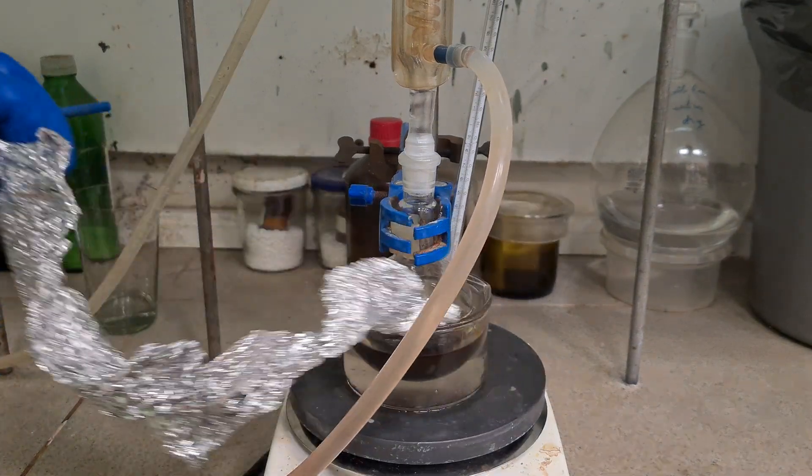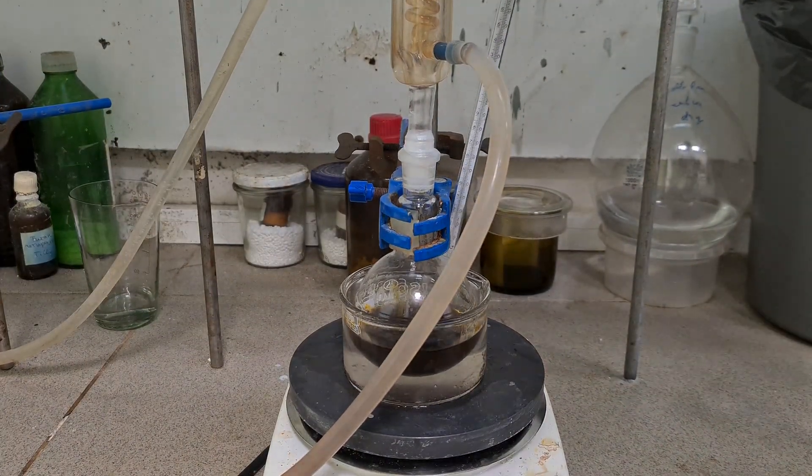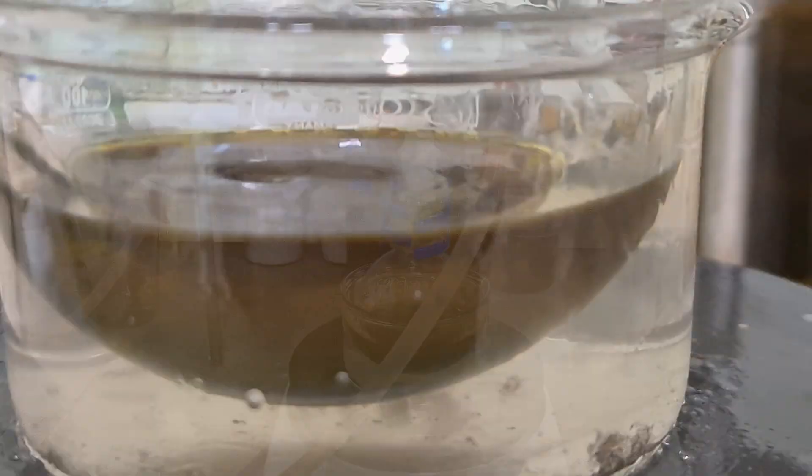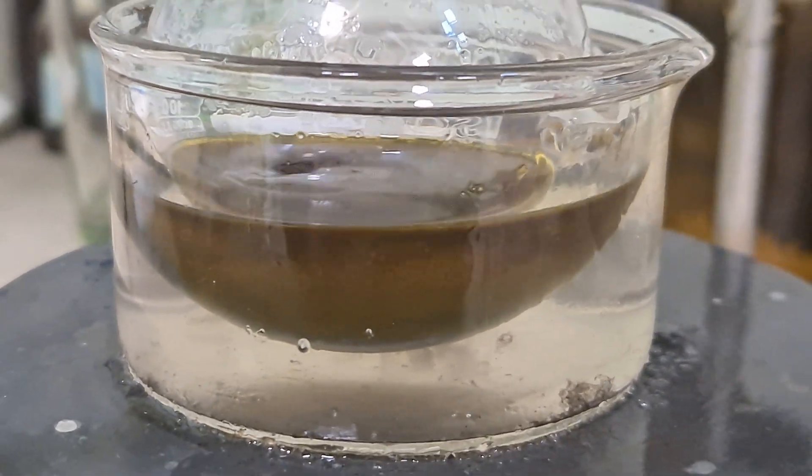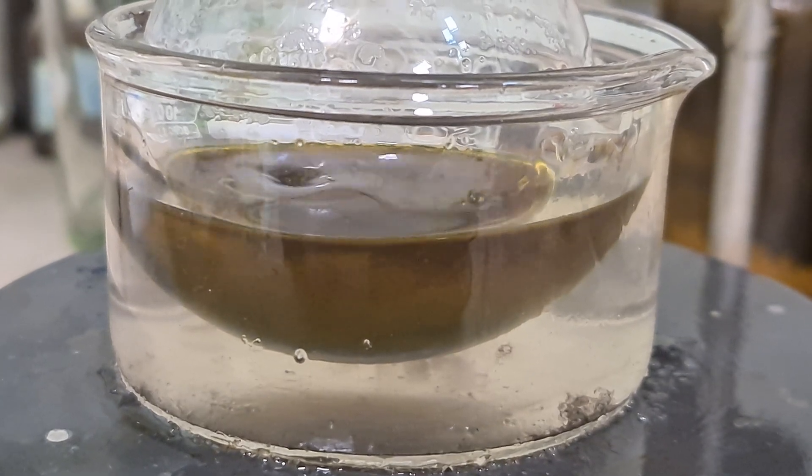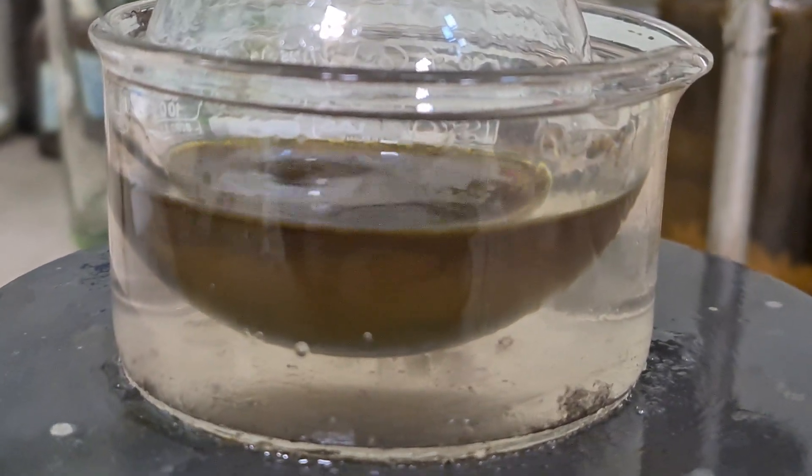After reaction completion, just uncover the flask and let it cool down to room temperature. As you can see, bis-precipitate is coming out. It's a nice shiny powder. Now let our reaction mixture store overnight.